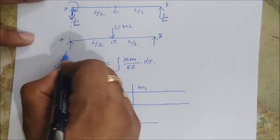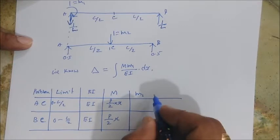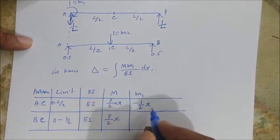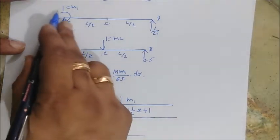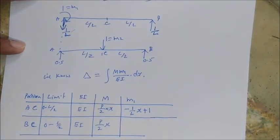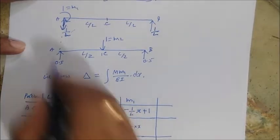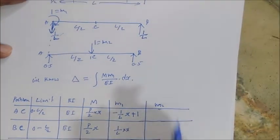So the reactions are 0.5... actually 1/L each. Let's get the reactions first and then solve. For M1 in region A to C: the reaction at A is 1/L, so M1 = (1/L)·X + 1, because we need to account for the unit moment. For the region C to B: M1 = (1/L)·X, which is sagging. For M2 (deflection): the unit load at C gives a reaction of 0.5, so M2 = 0.5·X for both regions AC and CB.